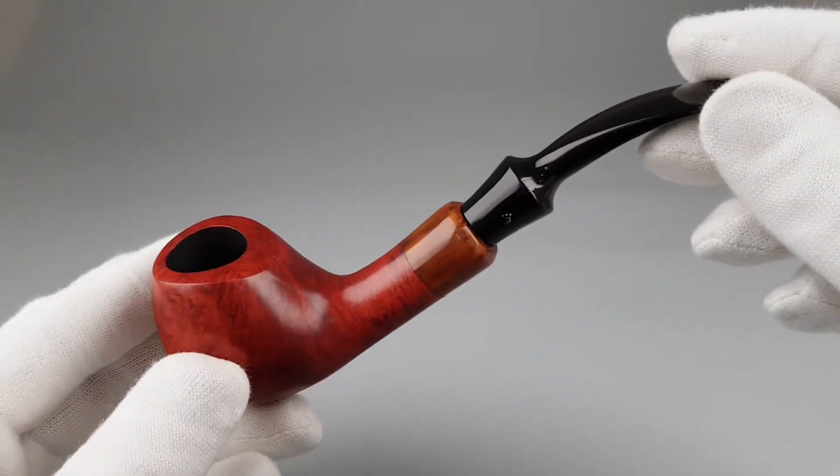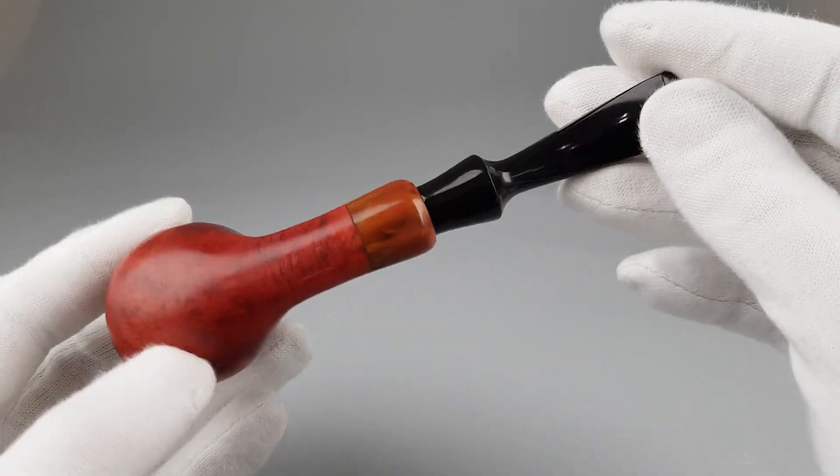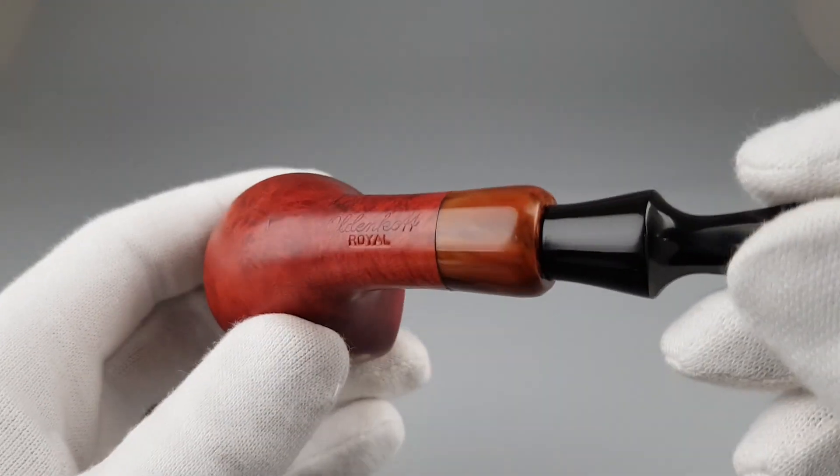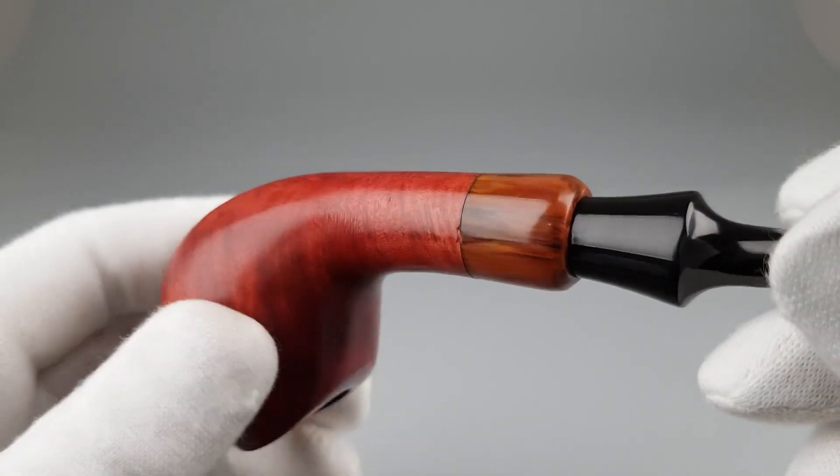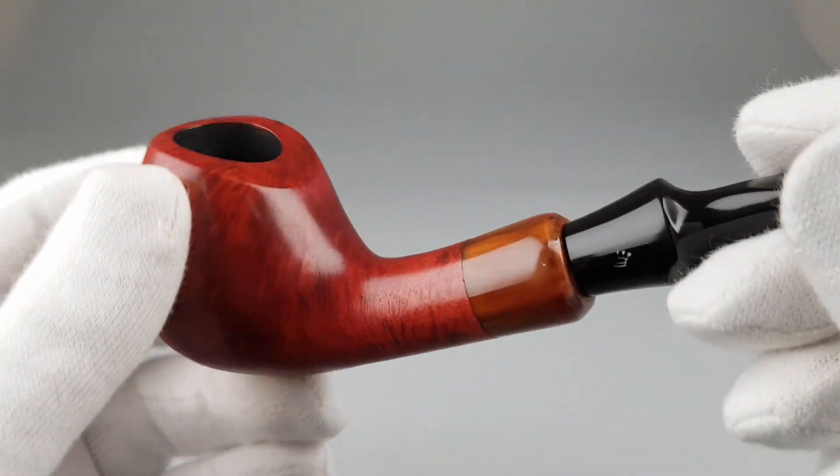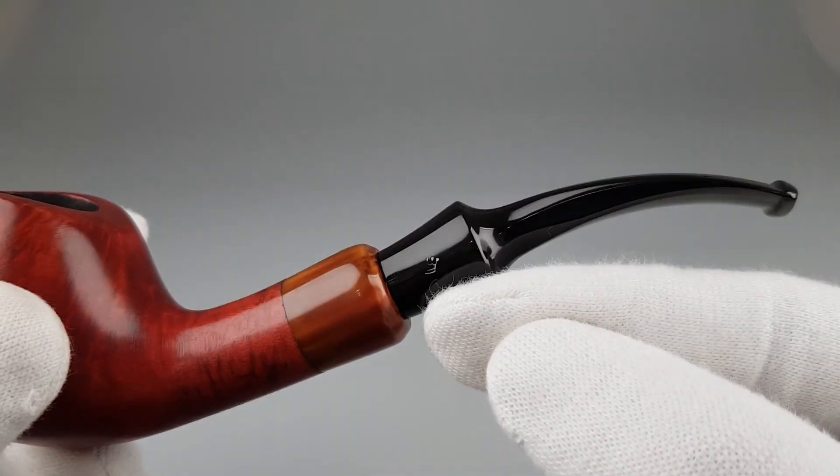We have, I think, one more active Oldencoat Royal listing. Stamping is found below Oldencoat Royal and if I'm correct nothing else is stamped on the pipe. There's the crown logo, slightly faded but still visible.